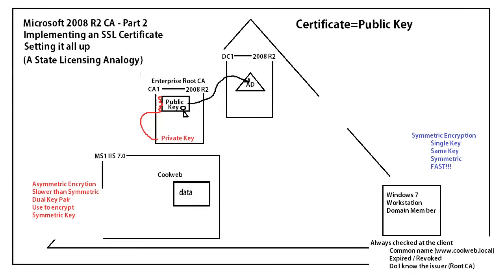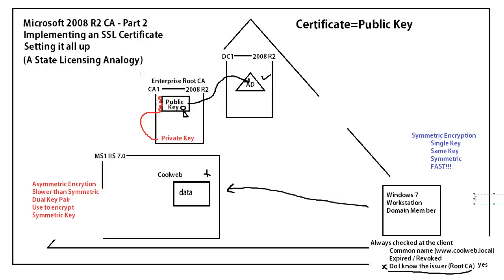There are three things that are always checked by the client. The first thing is: do I know who the issuer is of the certificate? Already, simply because of this certificate being published into Active Directory, the workstation knows about that. You're not going to need any type of group policy to tell them who the root is in this type of scenario. If I had a standalone root that was not a member of Active Directory, that would be totally different - we'd have to get a copy of that certificate, bring it into our domain controller, create a group policy, and go through some steps. So whenever the workstation goes to make the connection to the website, the first thing we're going to check is: do I know the issuer? And because of this publishing into Active Directory, the answer is going to be yes.